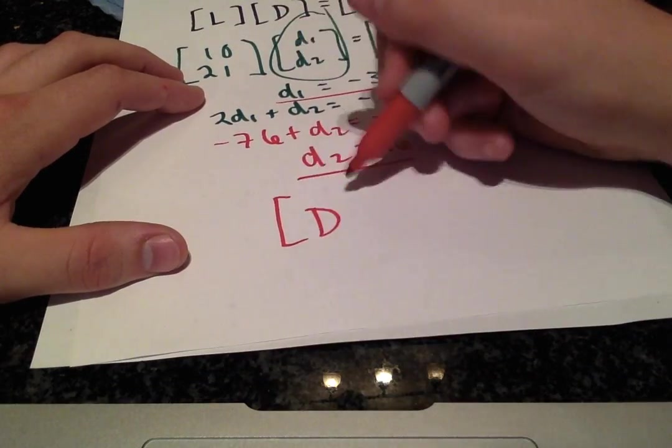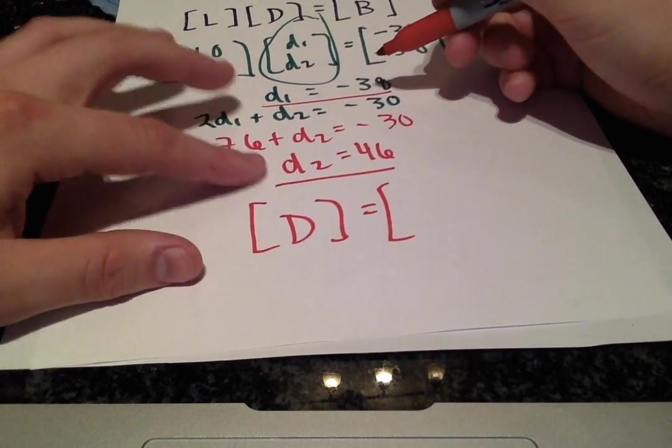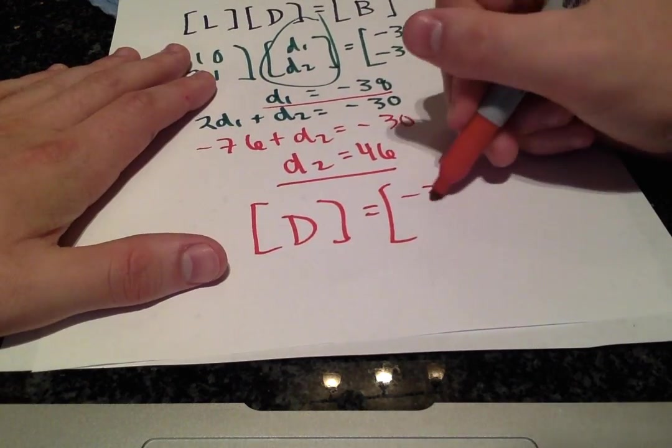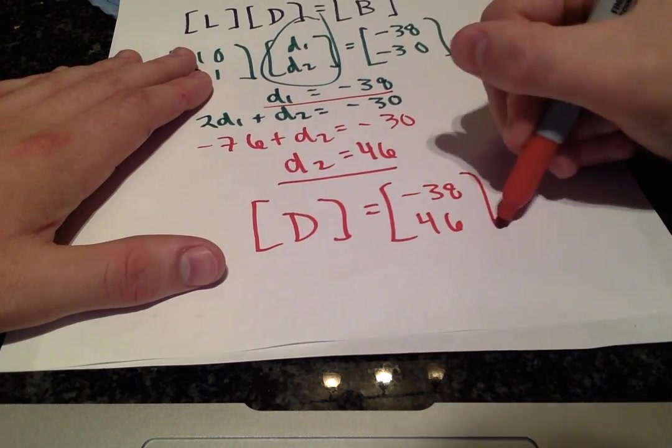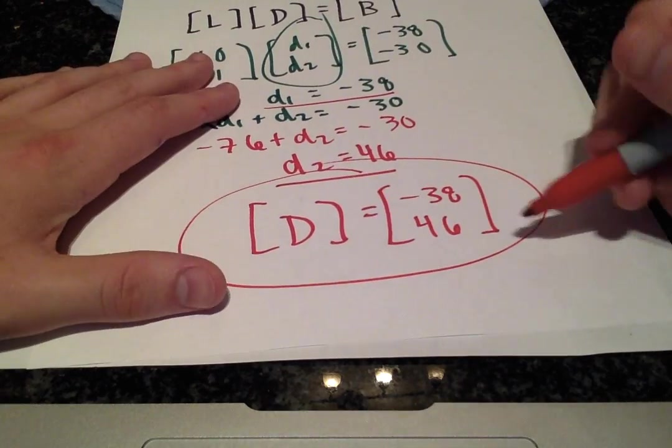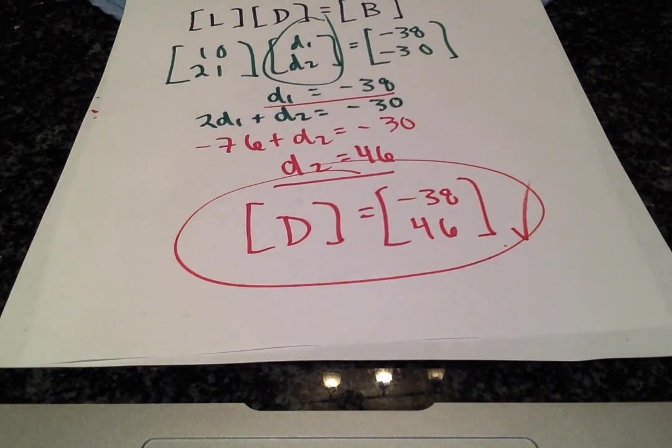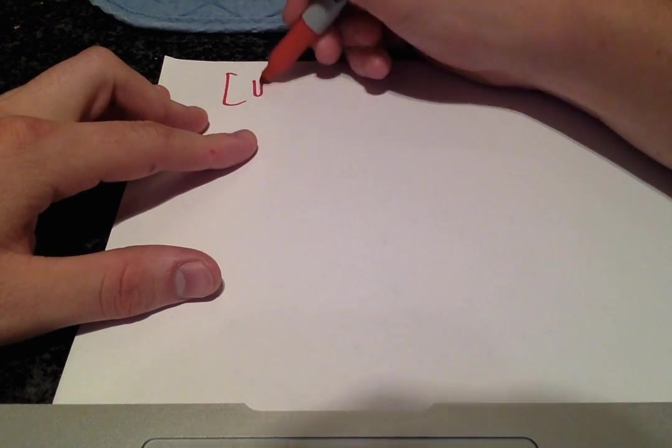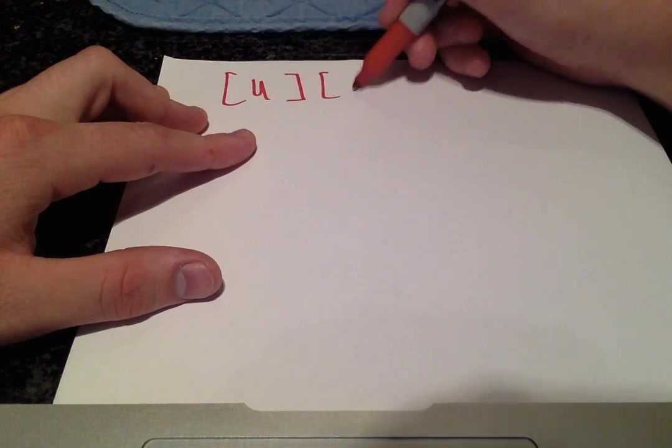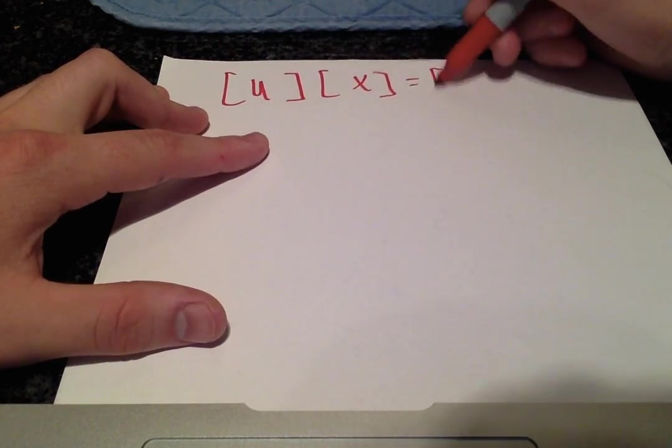We have our D vector is the two terms, D1 and D2, which is negative 38 and 46. The final step is to solve for our X solution vector, which we can do with this relationship, U times X is equal to D.